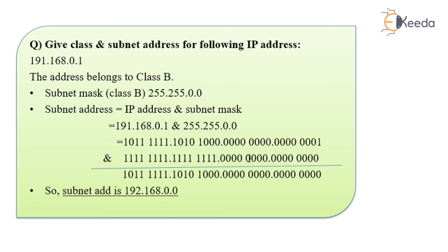The AND operation gives me this value — all zeros are converted as zero. This particular number corresponds to 168, and the first octet gives me the value 191. That is how I calculate the subnet address for a given IP address. Thank you.